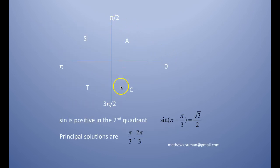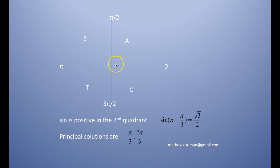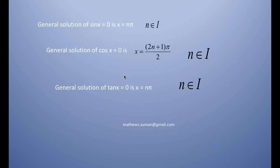This is because cos(π/2) = 0, cos(3π/2) = 0, cos(5π/2) = 0, and cos(7π/2) = 0. In general, odd multiples of π/2 give cos = 0, and we call these general solutions because they can be applied for any value of n.